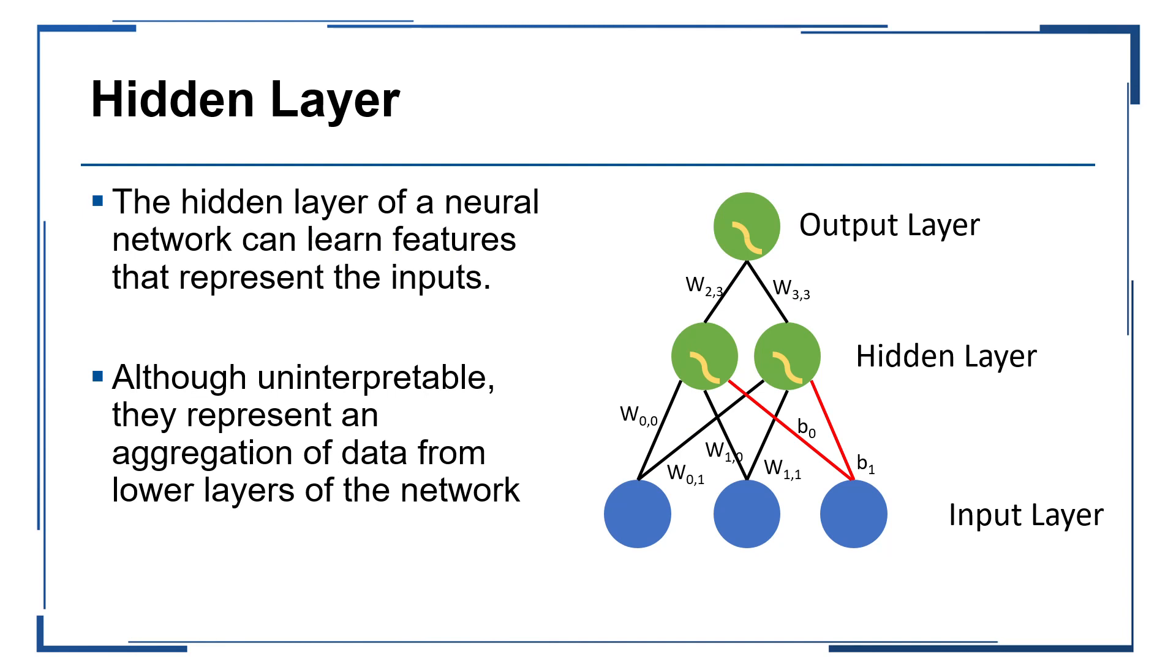We learned in the last video that the hidden layers of a neural network help to learn features that represent transformed, combined, and aggregated versions of the features or outputs of the preceding layers. It is important to note, however, that these features are largely uninterpretable in most scenarios.